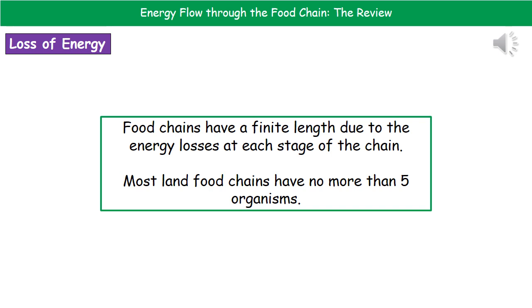What we find then is that food chains actually have a finite length, and this is all down to the fact that they lose energy at each stage of the chain. If we look at a land food chain, they usually have no more than five organisms, because at each stage energy has been lost, so eventually you reach a point where no other organisms could be supported due to those energy losses.